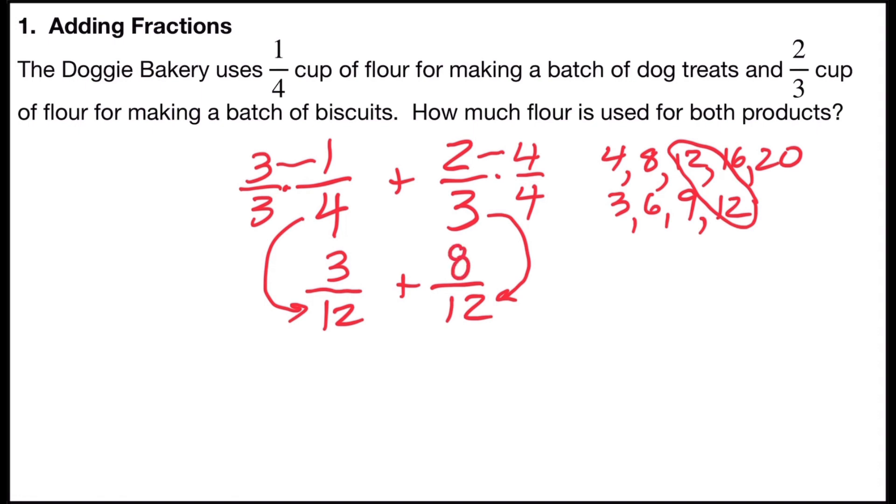3/12 plus 8/12 will give me 11/12. Add the numerators, keep the same denominator. 11/12 can't be reduced, and so the amount of flour used for both products will be 11/12 cups.